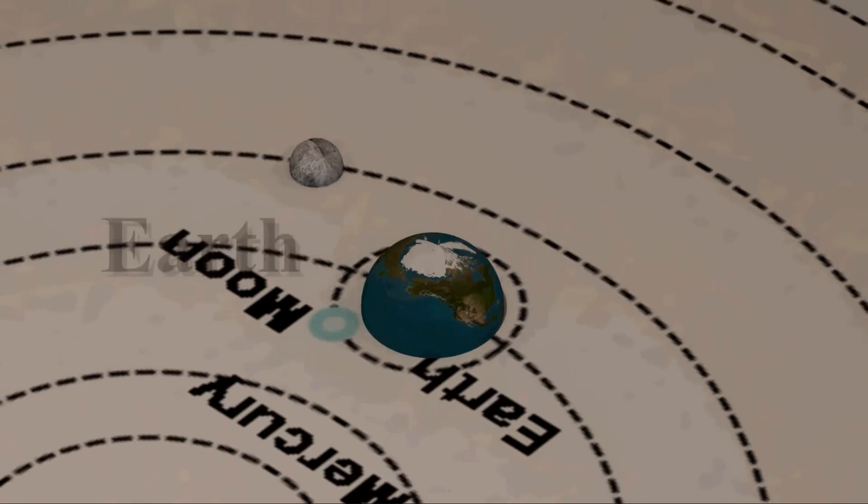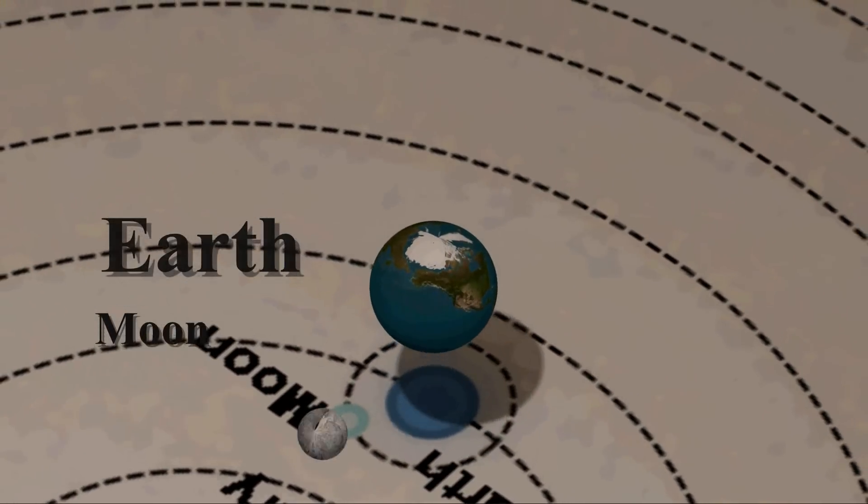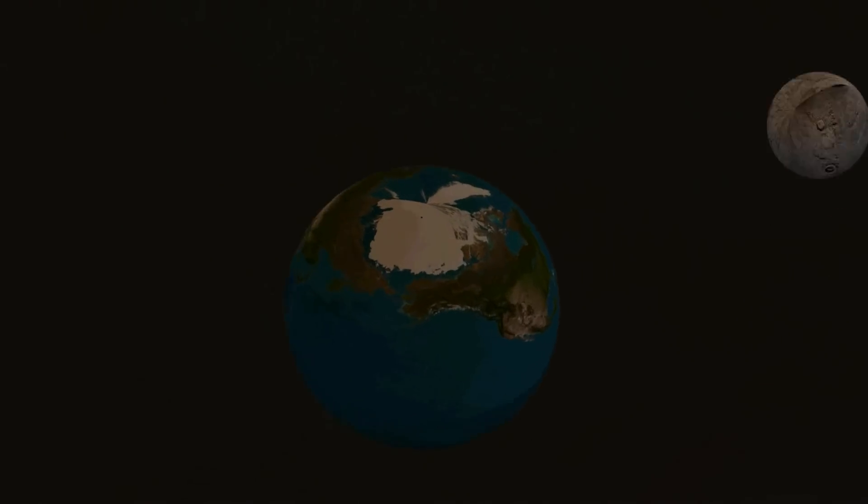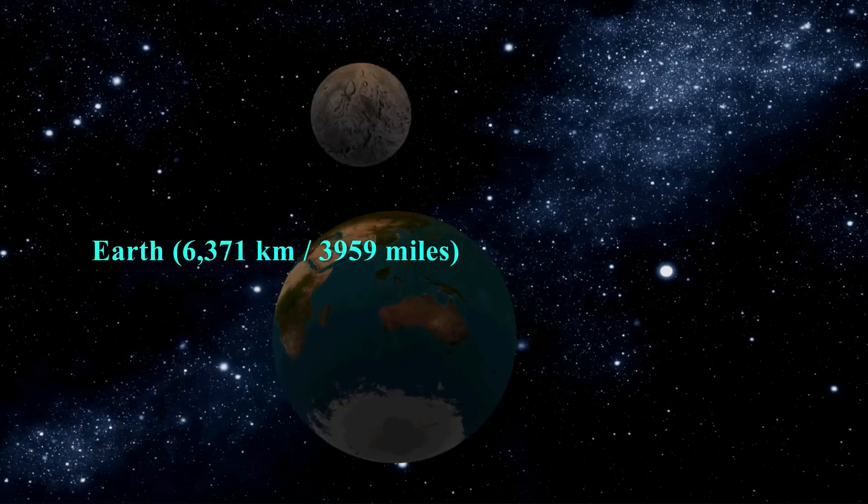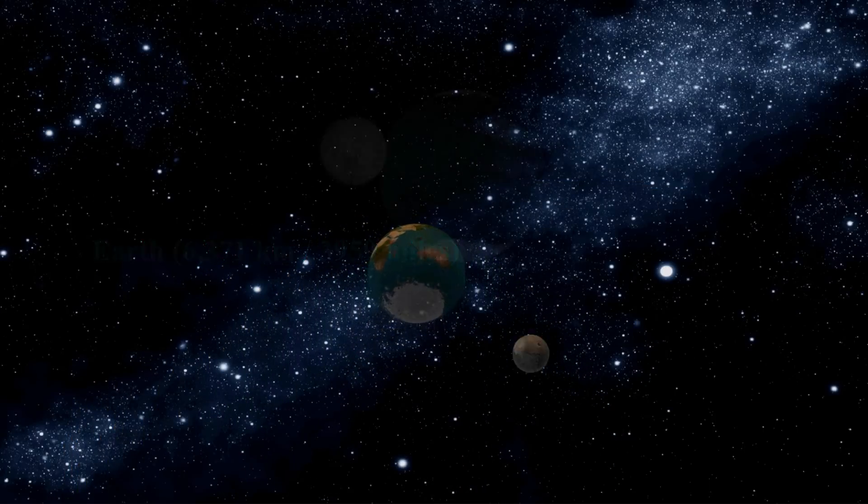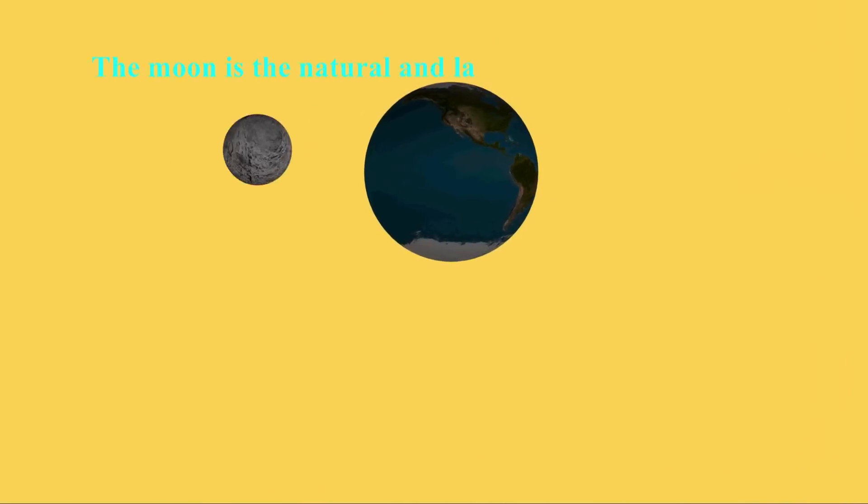Earth. Moon. Earth 6,371 km. Moon. The moon is the natural and largest satellite of the Earth.